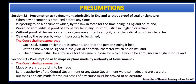Section 83 discusses about presumption as to maps or plans made by authority of government. This section says that the court shall presume that if the maps or plans are made by any state government or central government, they are genuine. However, the maps or plans made for the purposes of any cause must be proved to be accurate — that is the only condition.